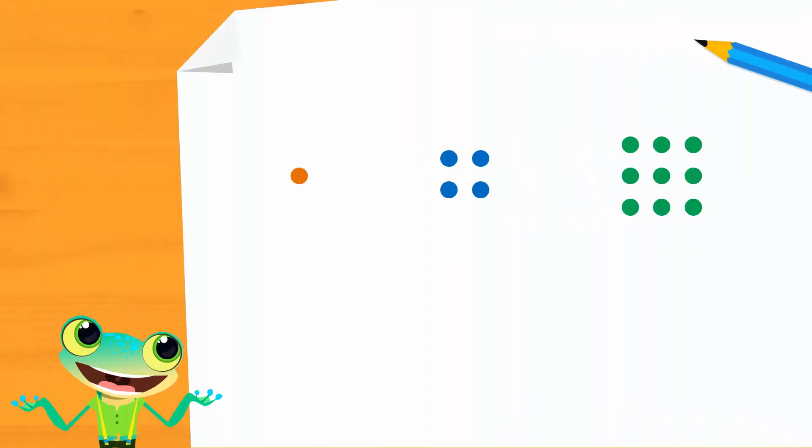Look at these three groups of dots. How many dots are there in each group? If we look closely, we can see that each group is a square.